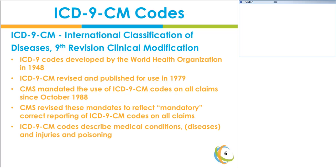Here is an overview of what the ICD-9 code system is all about. The ICD-9 codes were developed by the World Health Organization in 1948. It was revised in 1979 for use in the United States. Currently, the Centers for Medicare and Medicaid Services mandates the use of ICD-9 codes on all claims submitted for reimbursement since October of 1998.